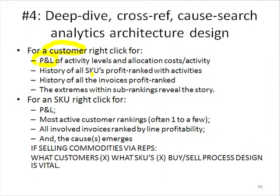There's another option where we can look at all of the individual stock-keeping units that that customer bought for the trailing period — whether you want to do a quarter, a year, or two years, you can. They're all profit-ranked. And then we can actually look at the individual activities on those SKUs. At the top of the SKU view, we ask: what are these SKUs and why are they so profitable?